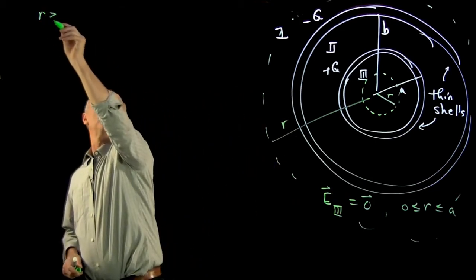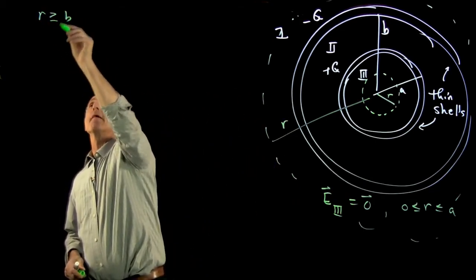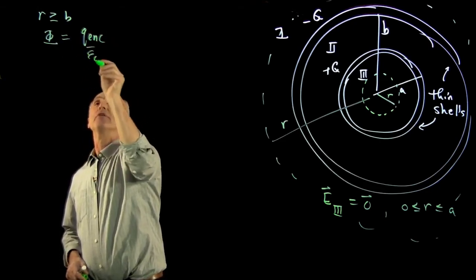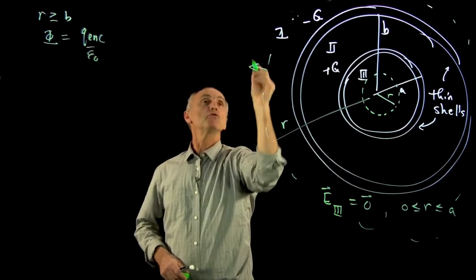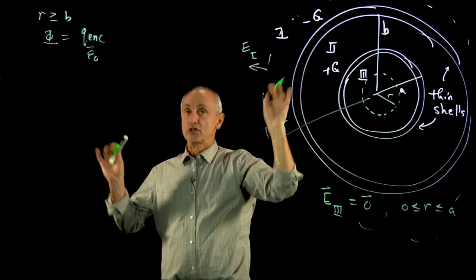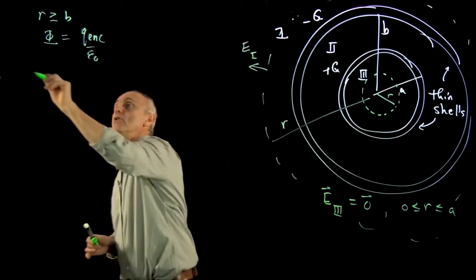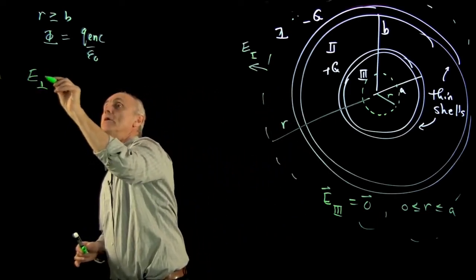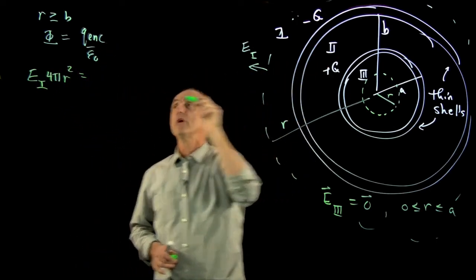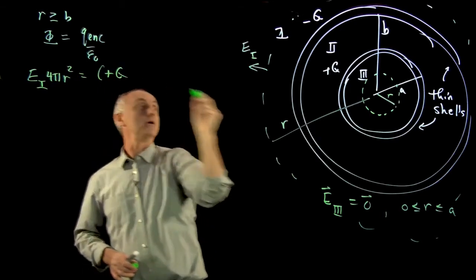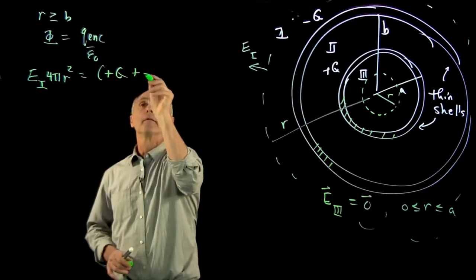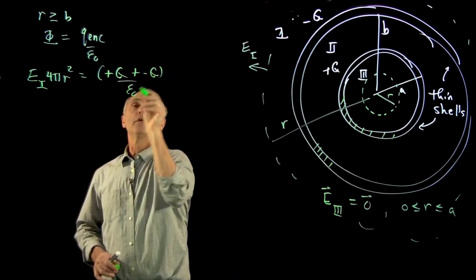If I do the same thing in region 1, so for r bigger than b, r flux equals q enclosed over epsilon 0. Well, the flux is the usual. So let's just conjecture that there's an electric field. We don't know yet. We'll just conjecture. But it has to be radially outward. So this side would be e1 times 4 pi r squared. But the charge enclosed is plus q, this one, and minus q, the outer one. And so that's 0.